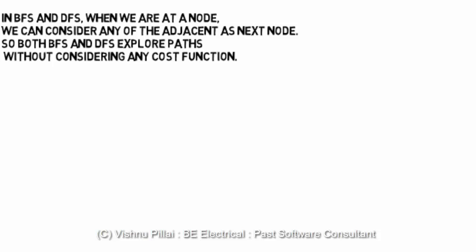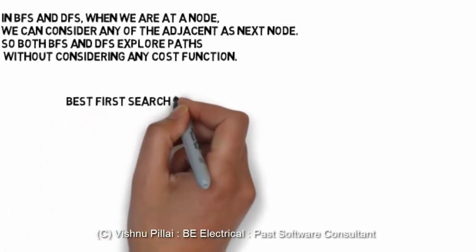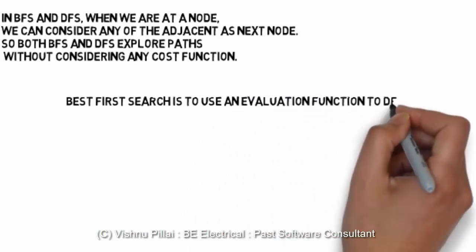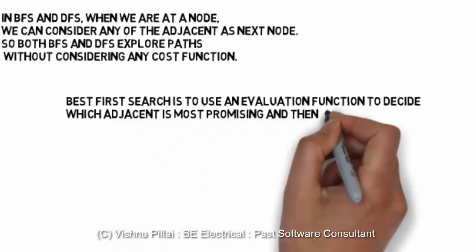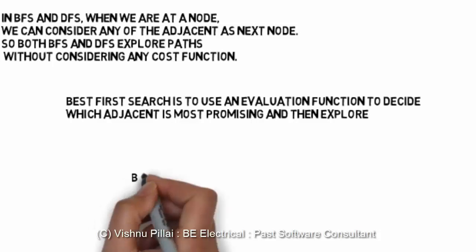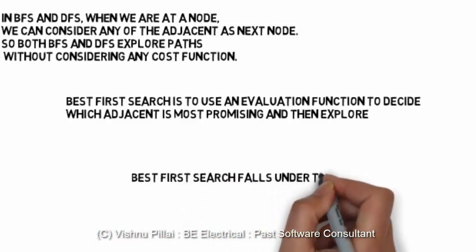In best first search algorithm we will consider the cost function which is also known as heuristic. Heuristic based on past experience helps in computing or defining a cost associated with each path we take or each next step. At each node based on a cost defined at that node, we know how efficient it will be to take a next node which will help us reach the goal more quickly.